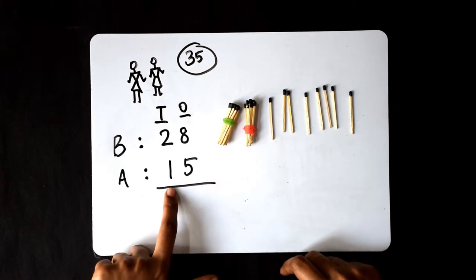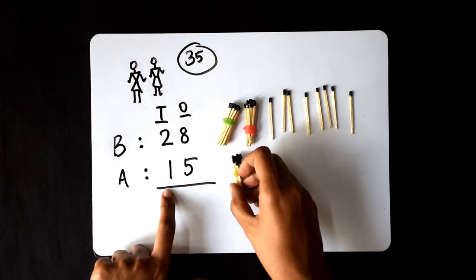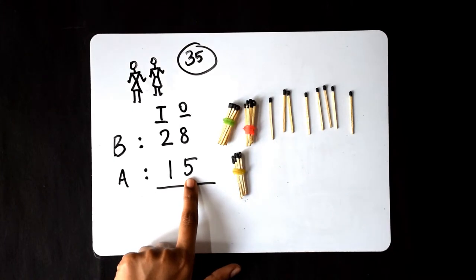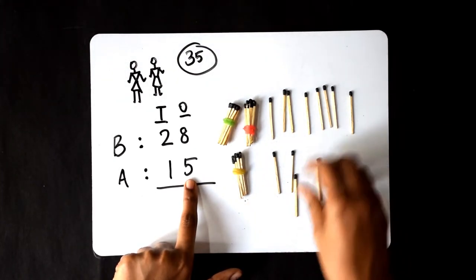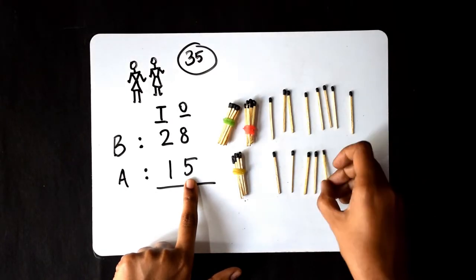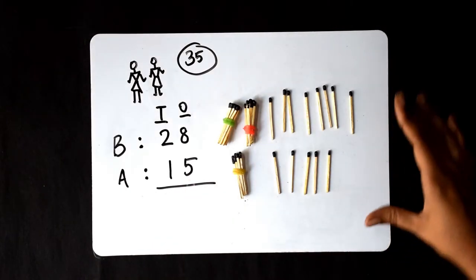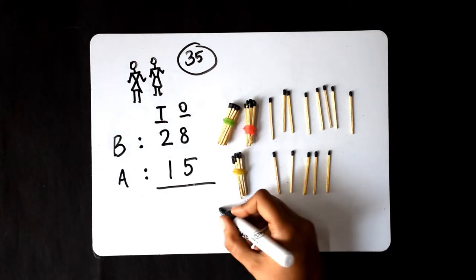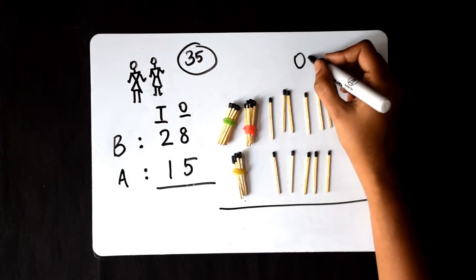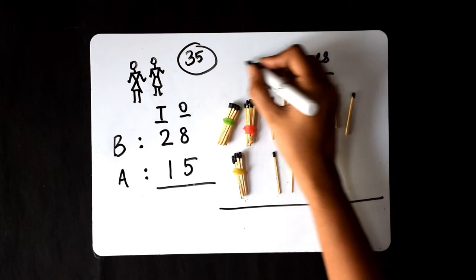In 15, we have 1 ten and we have 5 ones: 1, 2, 3, 4, and 5. Now, we have to add these two numbers but before that, let's write down the ones and tens.